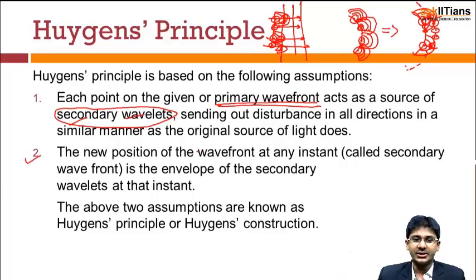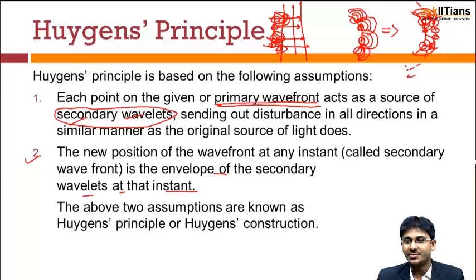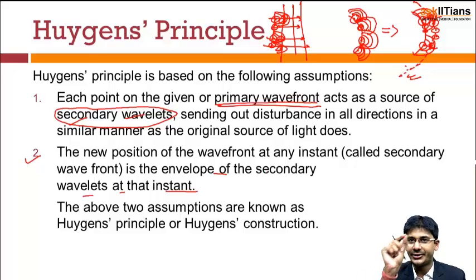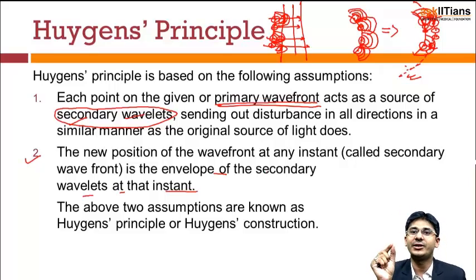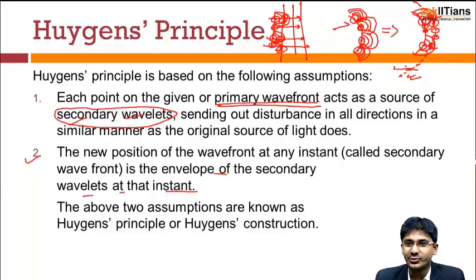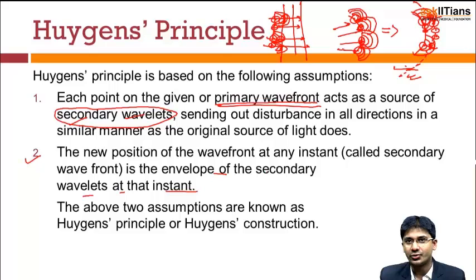The second assumption is that the new position of the wavefront at any instant — called the secondary wavefront — is the envelope of the secondary wavelets at that instant. This envelope is the dotted line I drew. What I did was: from the sources I drew the waves coming out, then I took those waves that are in the same phase, and the locus of those points — drawn with dotted lines — gives the wavefront. This is what Huygens' Principle states, considering each point as a source of secondary wavelets.